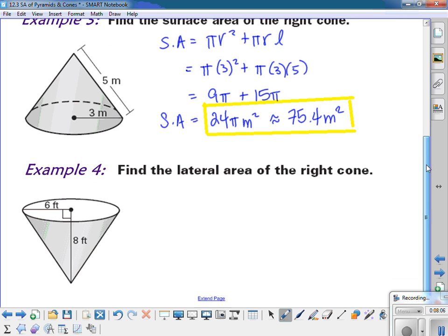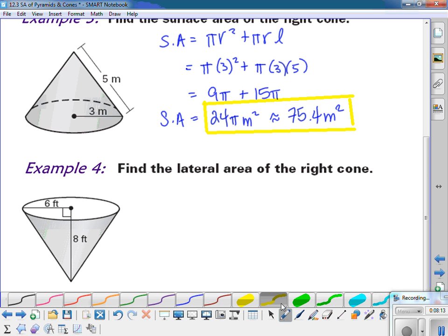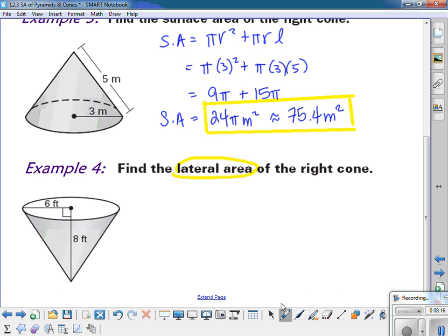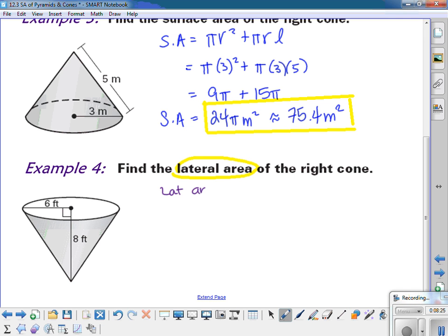And one more. Now on this one, they only want us to find the lateral area. So make sure you always read the instructions carefully. They're not asking for the total surface area. They just want the lateral area, which is going to be pi r L. So the problem is I don't have L, so I need to find the slant height first. Well, that's a right triangle. I can use the Pythagorean theorem. 6 squared plus 8 squared is going to equal L squared. And it's actually a 3, 4, 5 triangle, so you can also take the shortcut and just know that it's going to be 10, because that's 2 times 5. But if you need to work it out all the way, that's fine too.